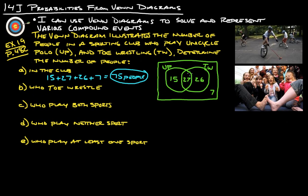Next, who toe wrestle. Now, these 26 people toe wrestle, but these 27 people toe wrestle and play unicycle polo, so we have to add those two together. It's 27 and 26. It's everybody inside this circle. Add those together and we get 53.